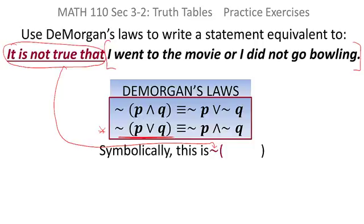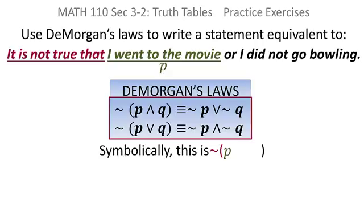Now, once I've got that, it's just a matter of going inside and looking at the two statements. The first statement I'll call P just for convenience is, I went to the movie. Then there's an or, and the last statement is, I did not go bowling. So I can let Q be the statement, I did not go bowling.